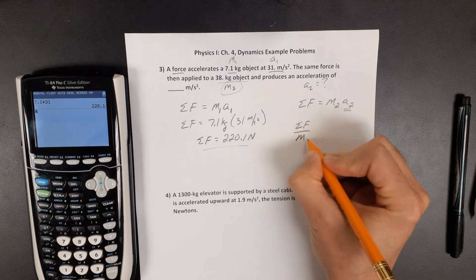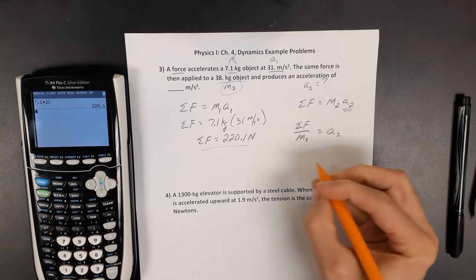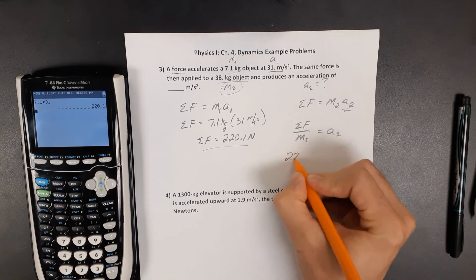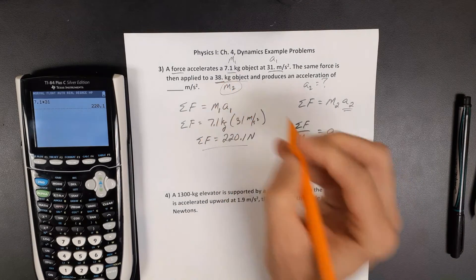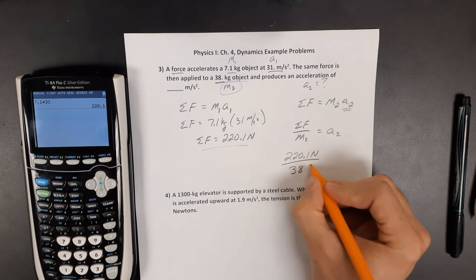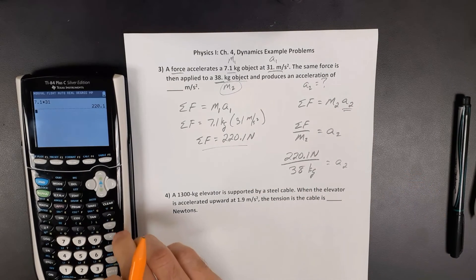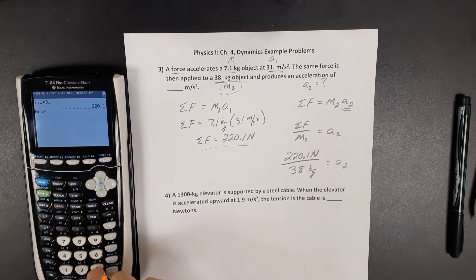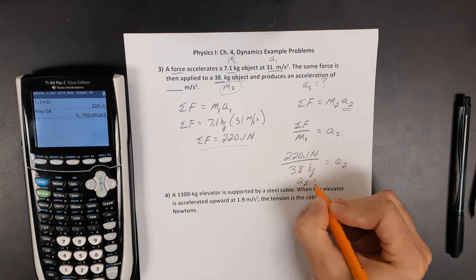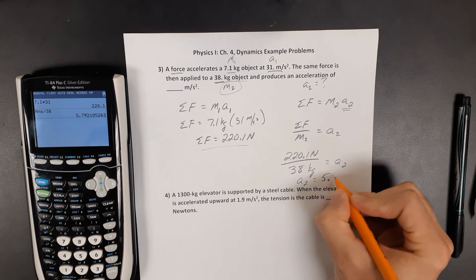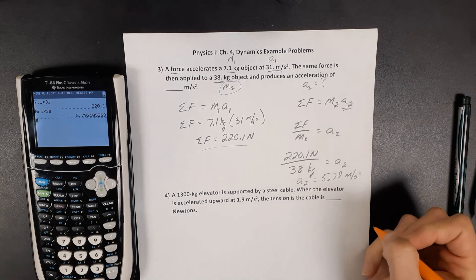So if we divide both sides by the mass, that will leave acceleration 2 by itself. So let's take this same force that we found a moment ago, divide it by the mass of object number 2, 38 kilograms. So I'm going to divide that answer I just had by 38 and I get an acceleration of 5.79 meters per second squared.